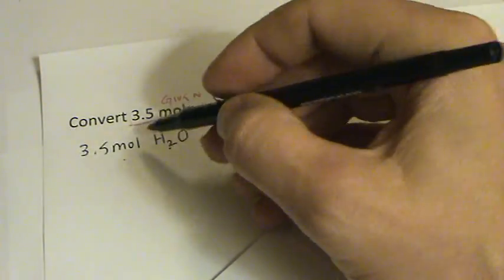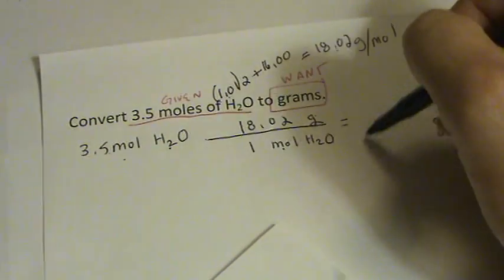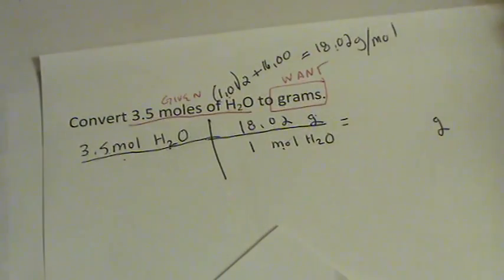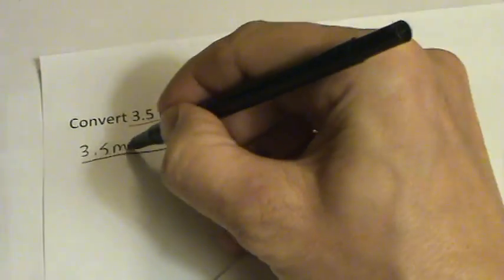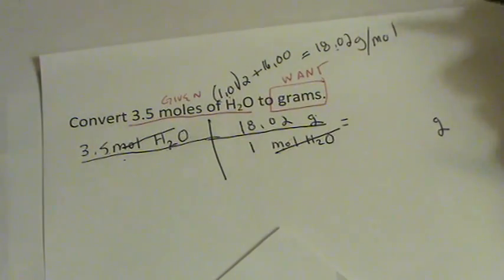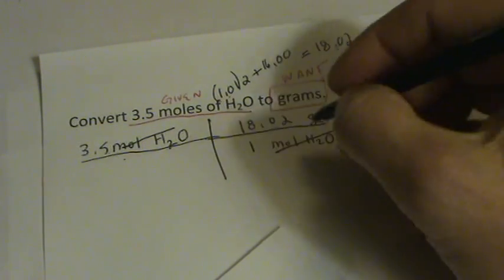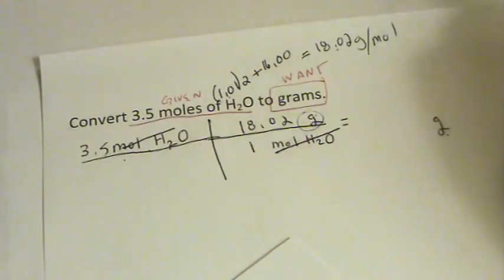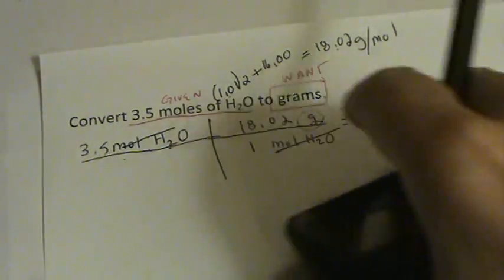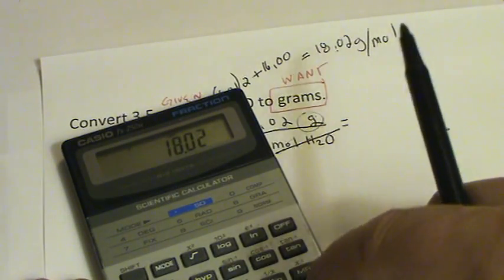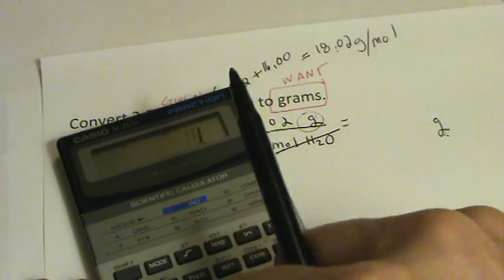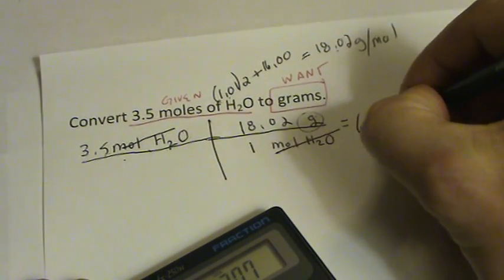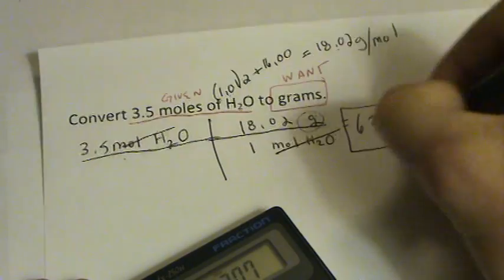The way I like to think about it is I'm multiplying this times this. So it's 3.5 and the moles are on top and on the bottom. They cancel out. And what's nice about that is it leaves us with grams, which is what we want. So it's 3.5 times 18.02 divided by 1. So really just 3.5 times 18.02. That gives me 63.07 grams.